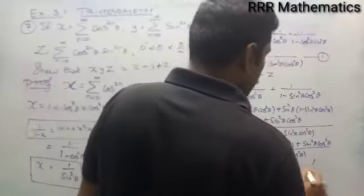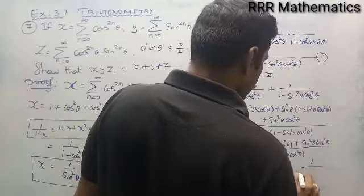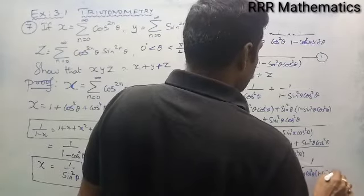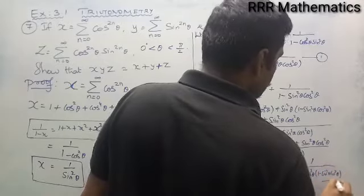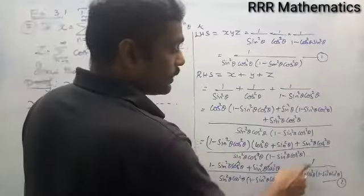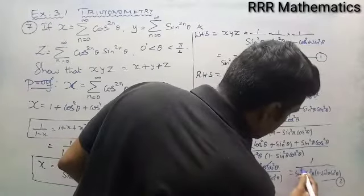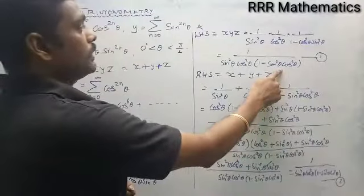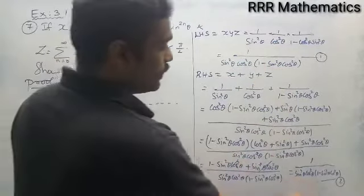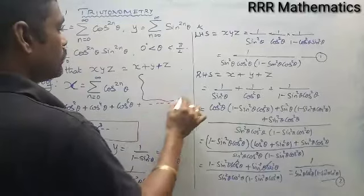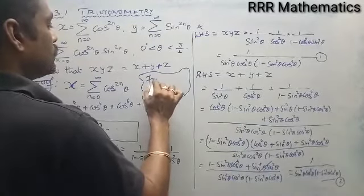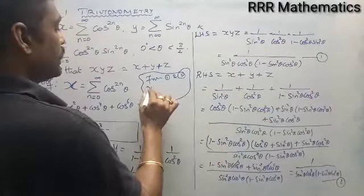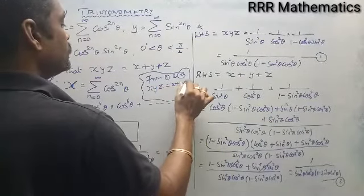These two terms get cancelled, and I am getting 1 by sin square theta into cos square theta into 1 minus sin square theta cos square theta. From equations 1 and 2, both sides are the same. I can conclude that x into y into z equals x plus y plus z.